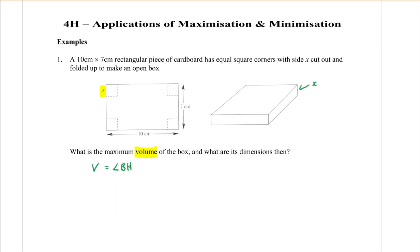I know the height is x, but what are the other dimensions? If it is 10 centimetres across this whole side, but I'm folding x up on that side and x up on that side, that gives 10 minus 2x. Similarly, if I have 7 centimetres here and I fold up x on each end, this one's going to be 7 take away 2x. So now I have a side length for my length, my breadth, and my height, and I'm going to sub them into my formula for volume.